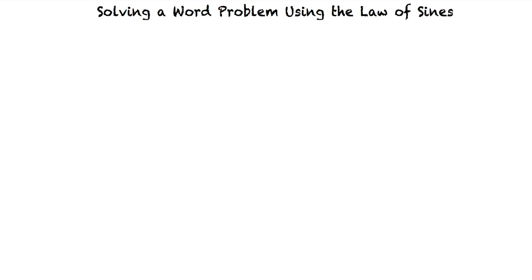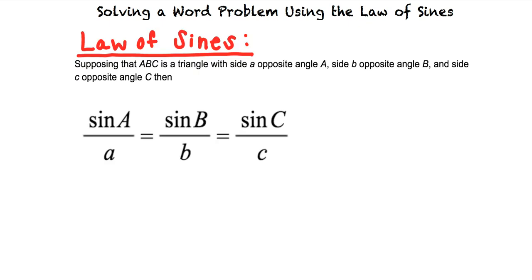The Law of Sines states the following. Supposing that ABC is a triangle with side A opposite angle A, side B opposite angle B, and side C opposite angle C, then sine A over A equals sine B over B, which equals sine C over C.